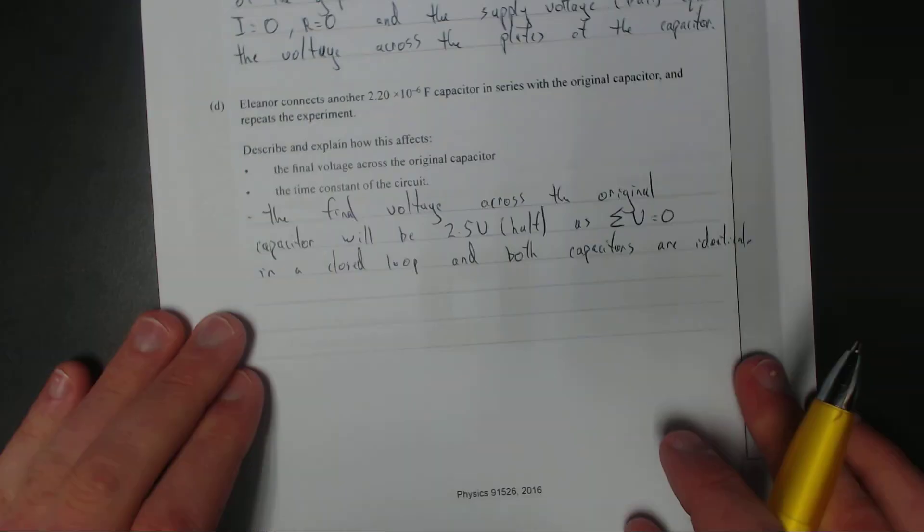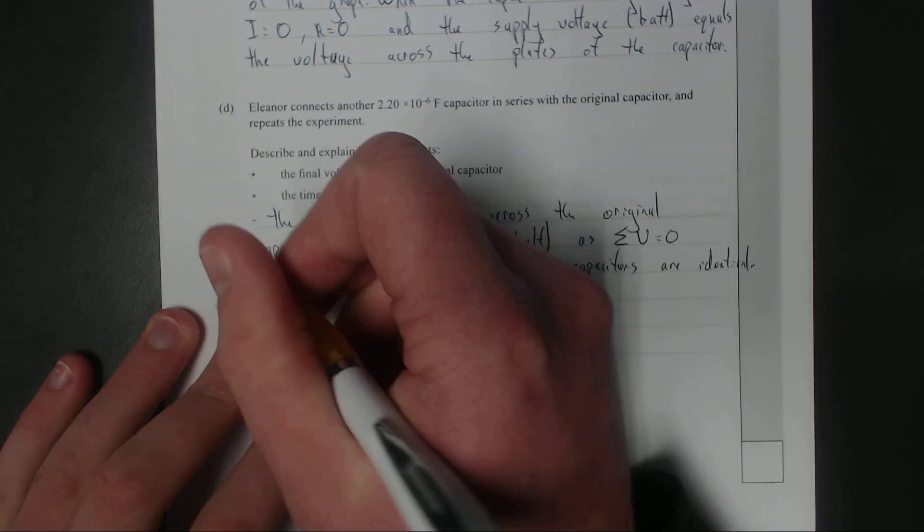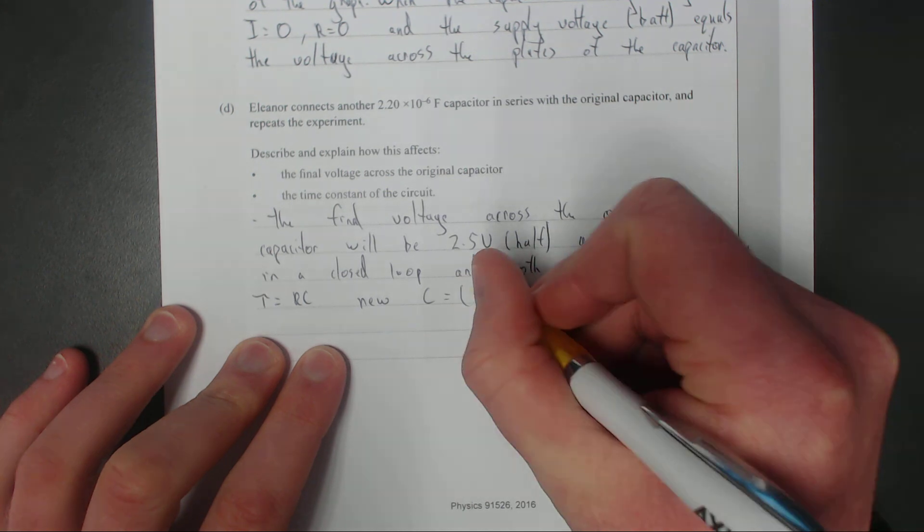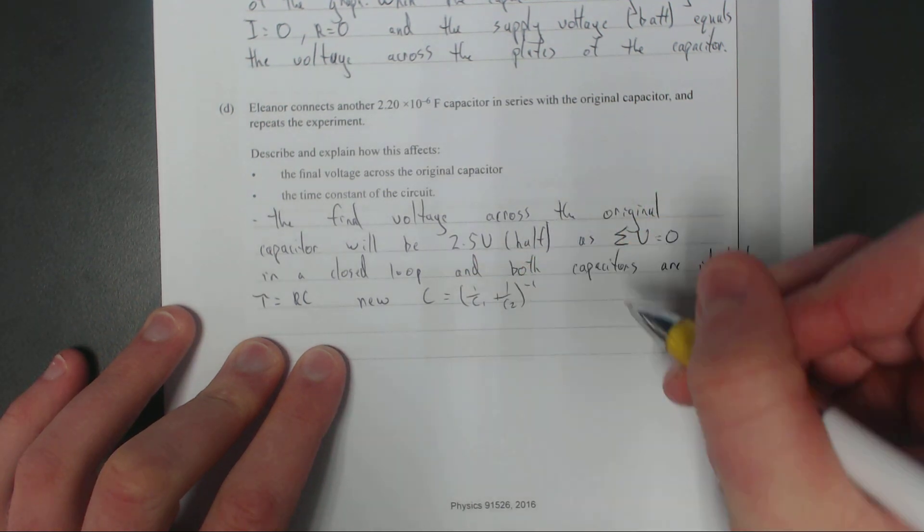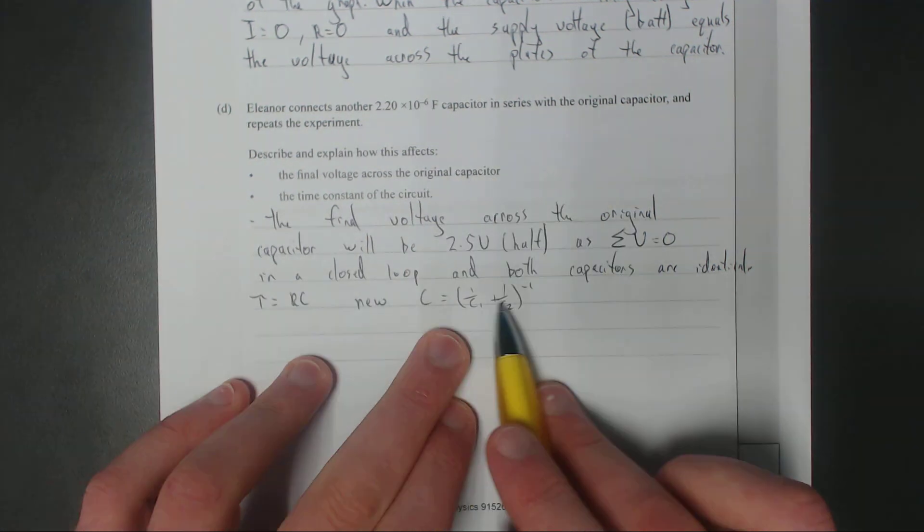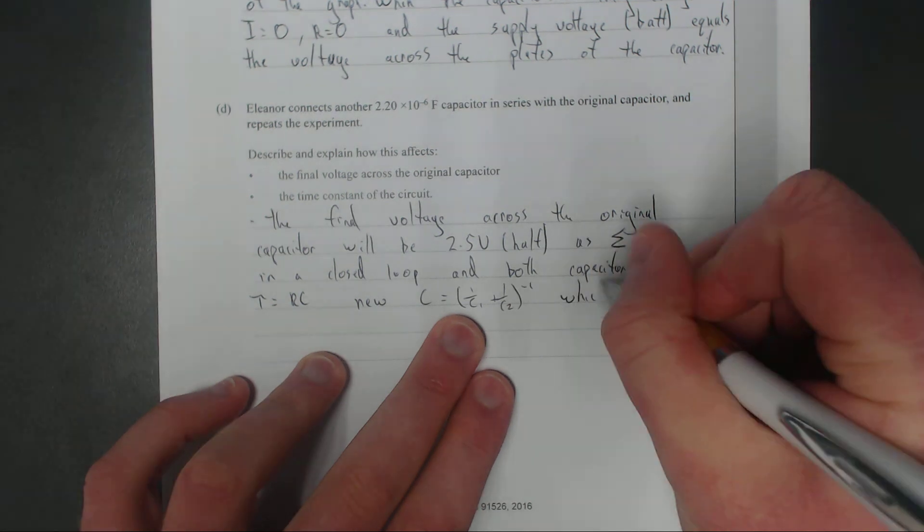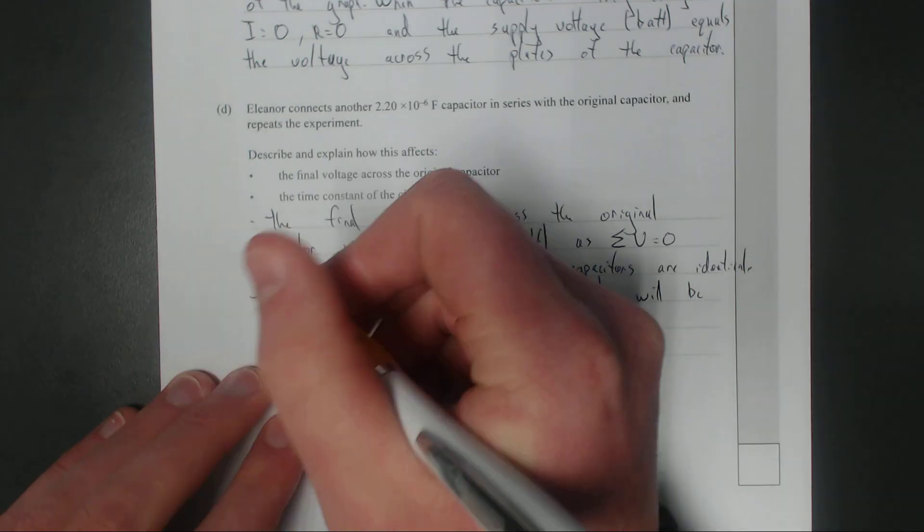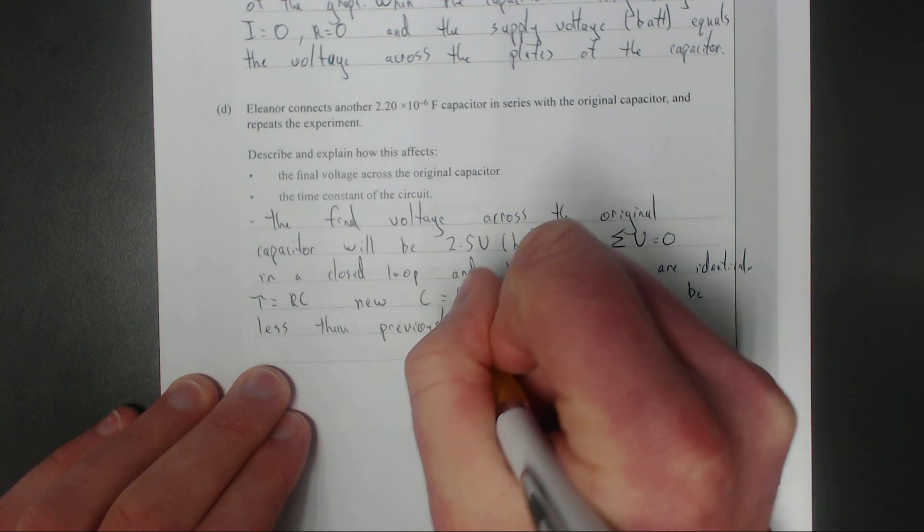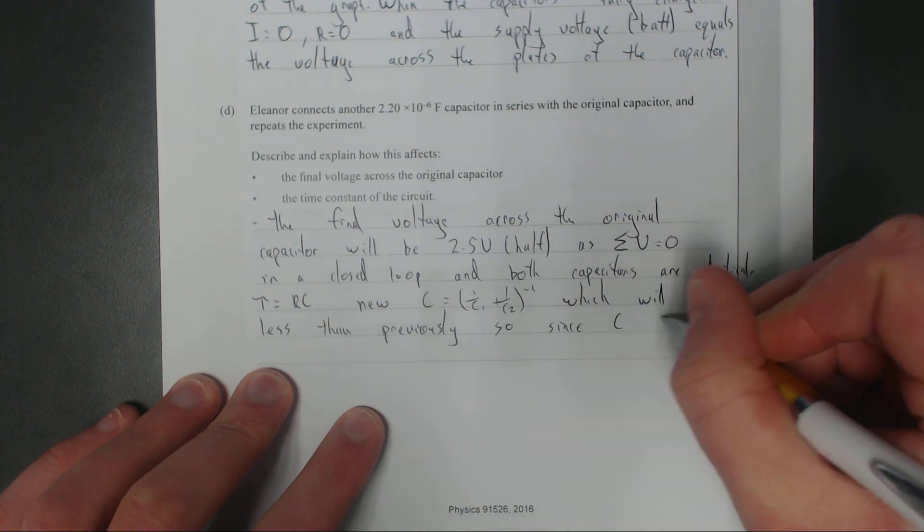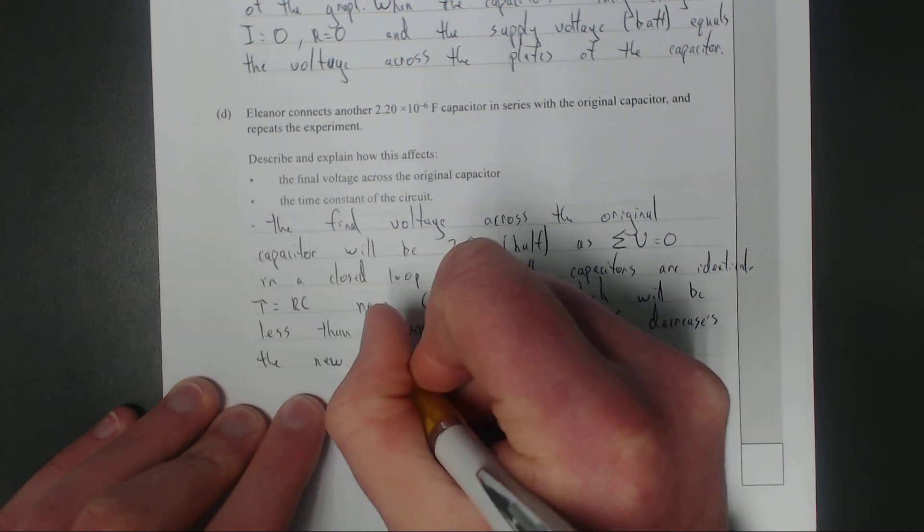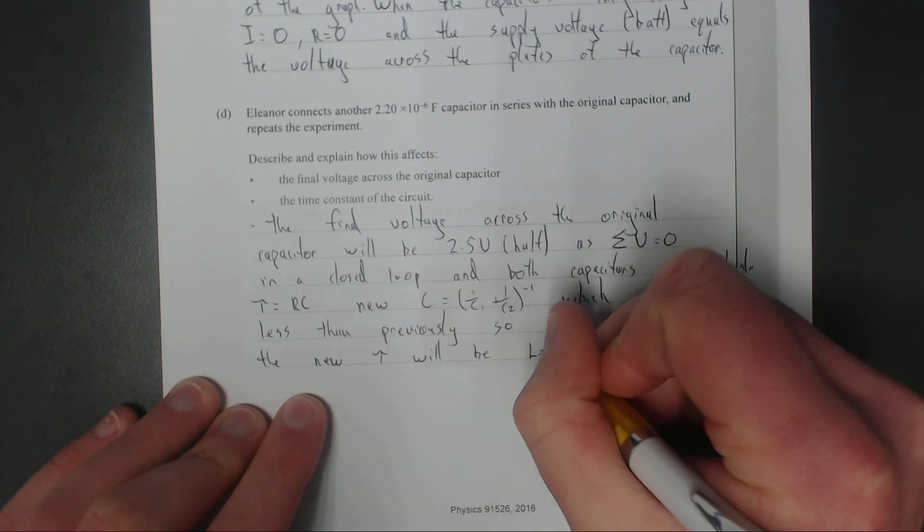Right, second part of the question: time constant of the circuit. So tau is equal to RC, and new capacitance is equal to one over C1 plus one over C2, bracket inverse. That's in series. Which will be less than previously. So since C decreases, the new time constant tau will be less.